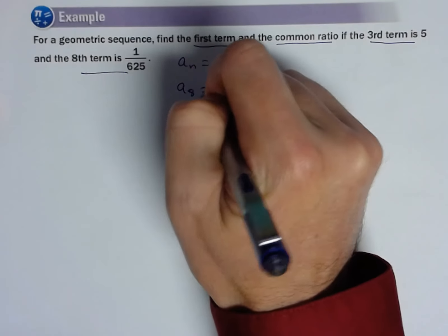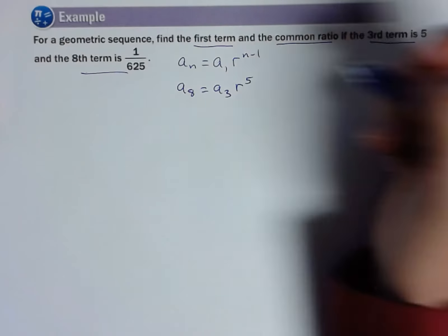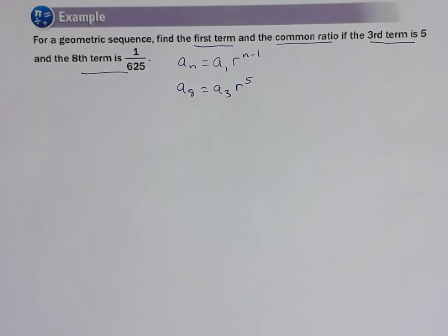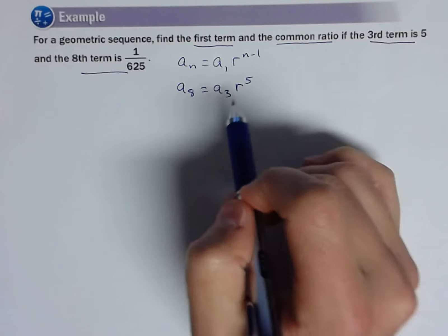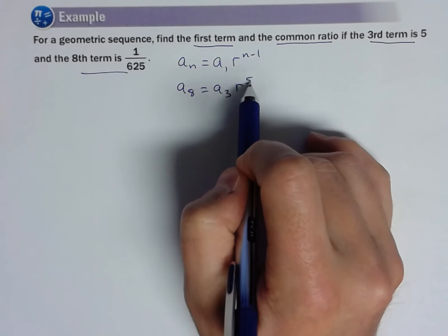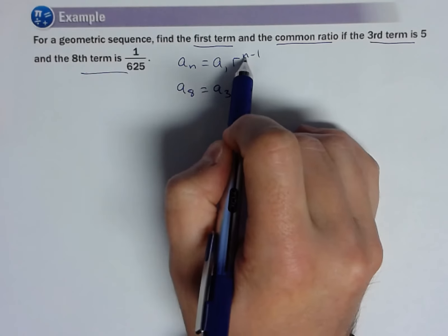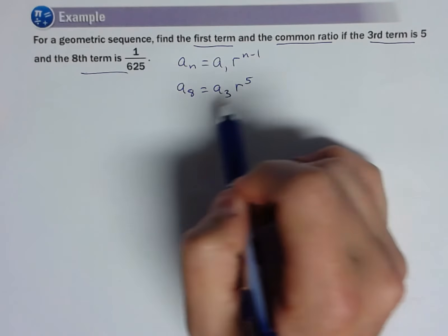Wouldn't the eighth term be the third term times R to the fifth power? Where did that come from? Well, I don't know the first term, but I know the third. And so if I multiply it by R to the fifth, eight minus three is five, n minus one, right? So that's how we can come up with that.